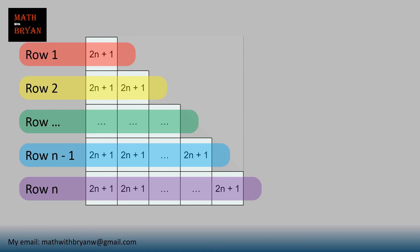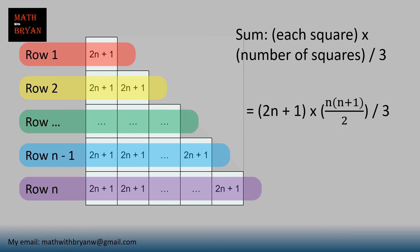So, to find the final answer, we take the number on each square, multiply that by the number of squares, all divided by 3. We can simplify, and we get 1 third n cubed plus 1 half n squared plus 1 sixth n.